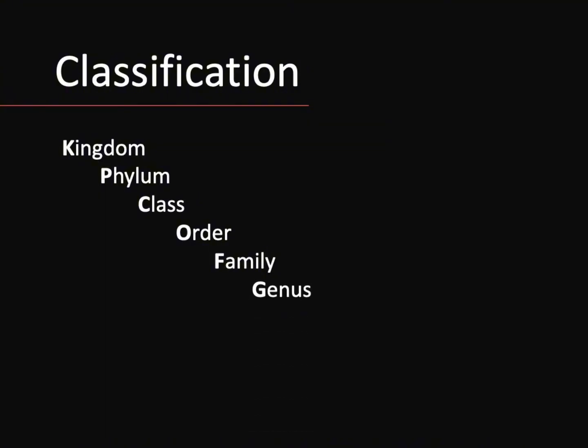Moving on to genus — this is where things start to get way more specific. A genus groups plants that are closely related and similar in appearance. For example, Acer is the genus for maples, and all maples share certain traits like similar leaf shapes and sap-producing capabilities. And lastly, we have species — individual types of plants so closely related that they can reproduce and produce viable offspring. For example, Acer saccharum is sugar maple, a specific species of the Acer genus.